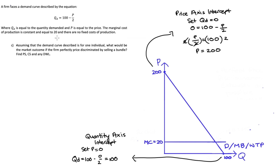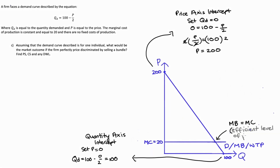When we perfectly price discriminate, the firm is going to produce right up to the intersection of marginal cost and demand, where marginal benefit equals marginal cost. This is the efficient level of production — it exhausts all possible trades.